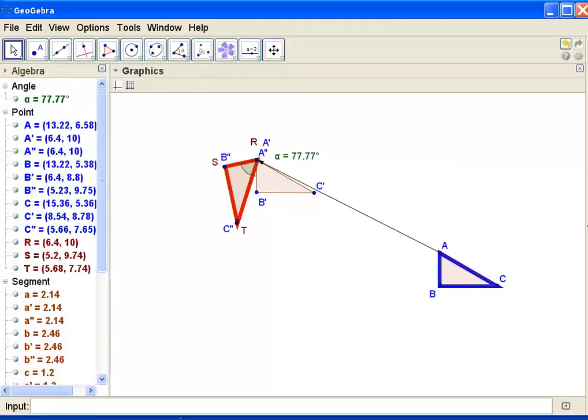And you'll notice that it has rotated properly. Let me adjust the labels. We can see now that the final triangle is A double prime, B double prime, C double prime. And it does match up with the triangle that I wanted to match up with.